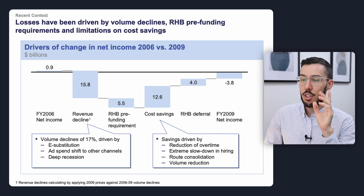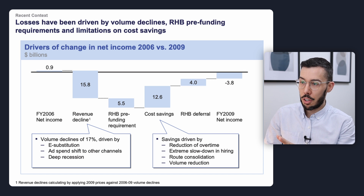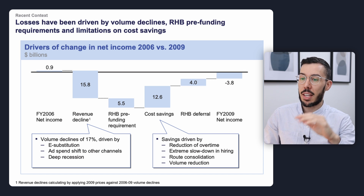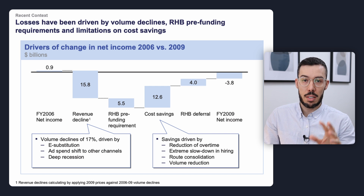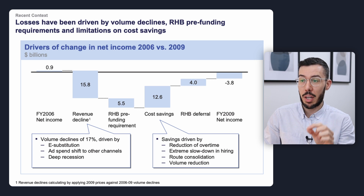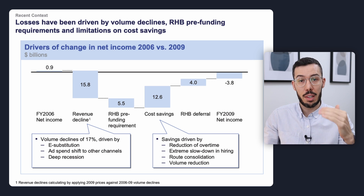Now let's look at a McKinsey example of a movement waterfall chart. This slide explains the drivers of change in net income over time. The initial value is the FY06 net income, followed by downward drivers, then upward drivers, finishing with the 2009 net income — explaining why net income changed from '06 to '09. McKinsey smartly used callouts to explain why revenue decline and cost savings were the largest drivers. If I were building this chart, I'd use different colors for positive and negative movements — green for positive, red for negative — and add plus or minus signs next to the values.